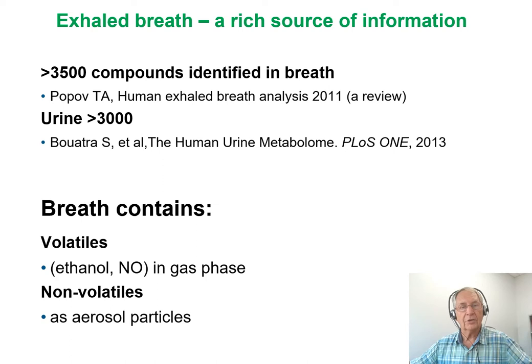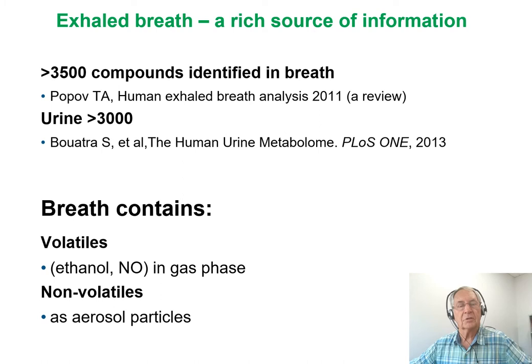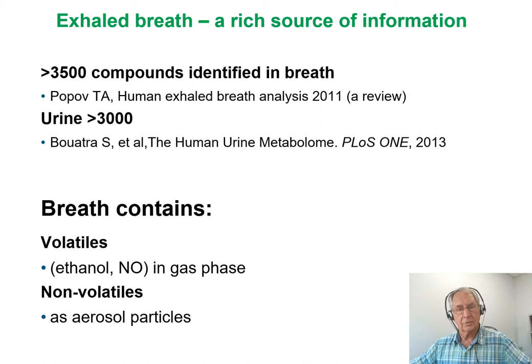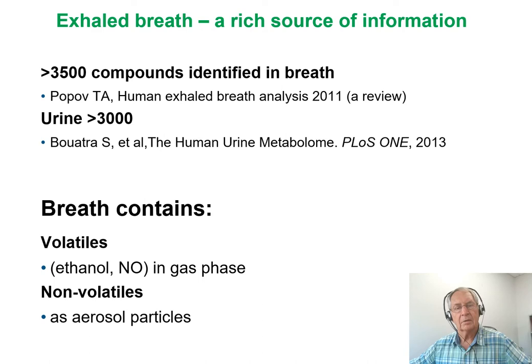Exhaled breath is a rich source of information. It's known and reported in a 2011 review that there are over 3,500 compounds identified in breath. Urine has thousands of chemicals including endogenous chemicals, drugs, and their metabolites. Blood and plasma analysis has been used to monitor the pharmacokinetic distribution of drugs. Breath contains volatiles such as ethanol and nitric oxide in the gas phase, but also non-volatiles as aerosol particles. The matrix components in breath are much fewer and simpler than those in urine or plasma.